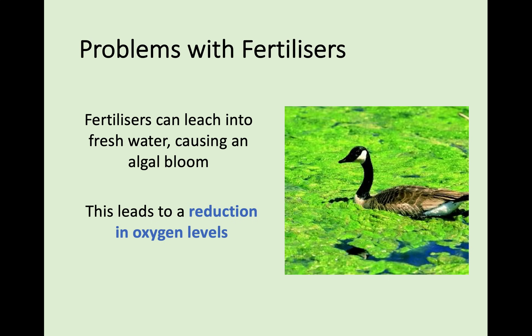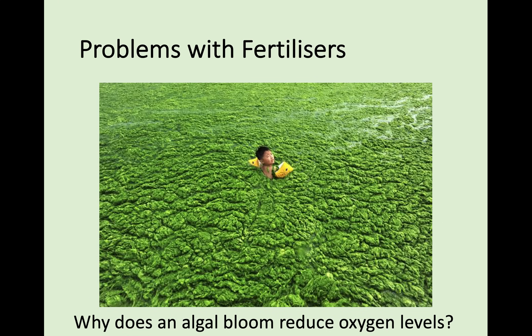One of the problems with fertilisers is something called algal bloom. Fertilisers can leach — spread and leak — into fresh water, causing a massive increase in algal growth as shown in this picture. This leads ultimately to a reduction in oxygen levels in the water ecosystem, having a really negative impact. This example from China shows a massive algal bloom in a lake — it has almost wiped out the freshwater ecosystem below.